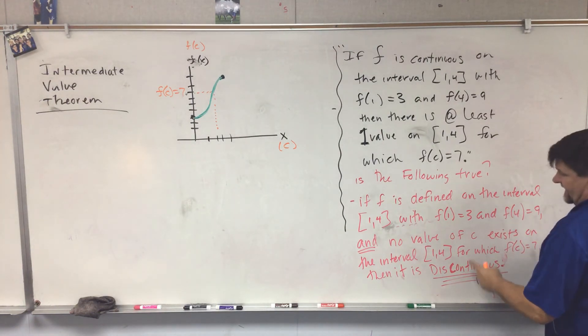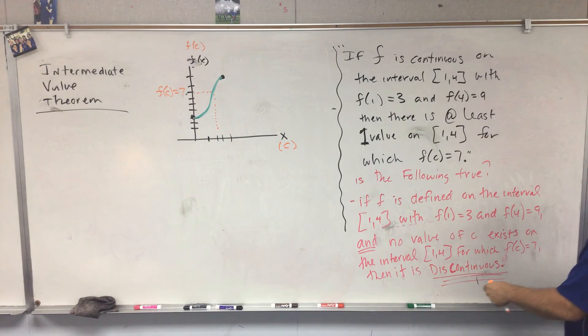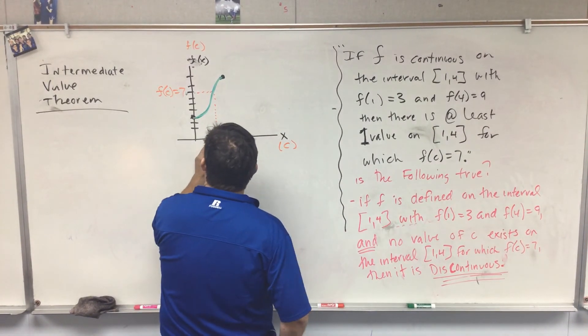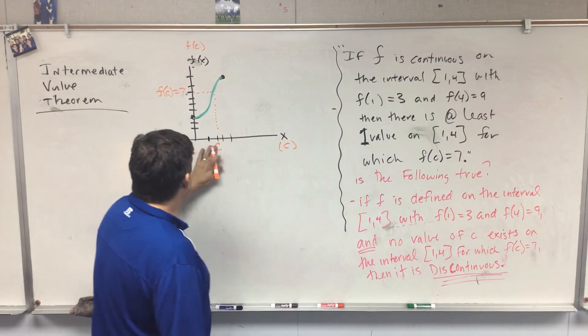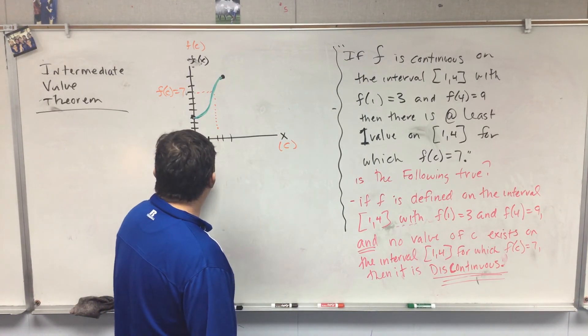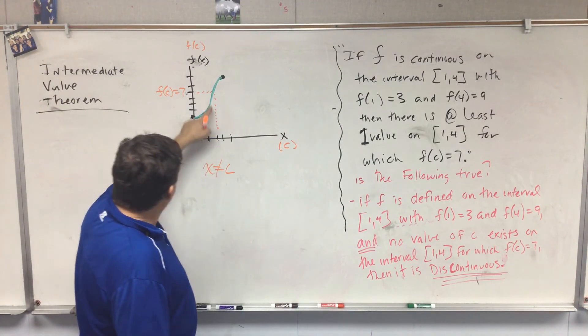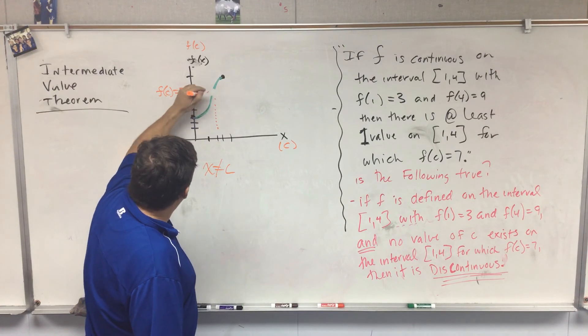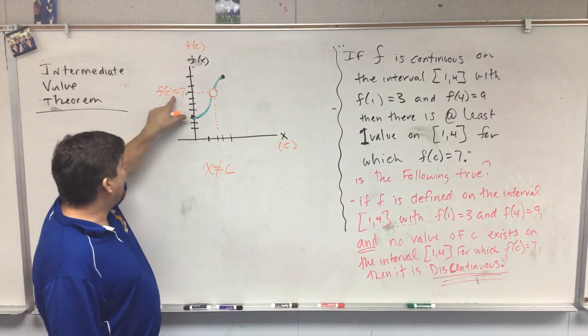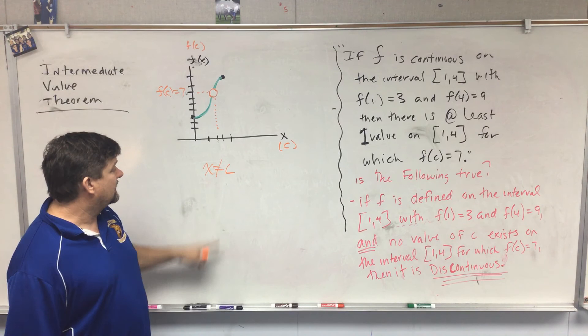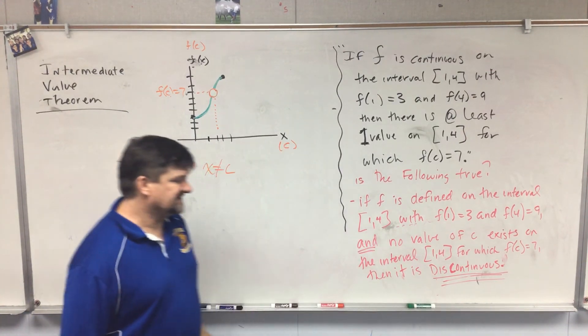So they're asking us, if this statement is true, is it discontinuous? So let's look at this. Right now the top one says I have a value of c. The bottom one says, and no value of c exists. So what does that mean? That means x cannot equal c. If x cannot equal c, what happens at that exact point? It's an open circle, because it says there is no value of c at f(c) equals 7. So if x cannot equal c right there, it has a break in it, then it's definitely discontinuous.